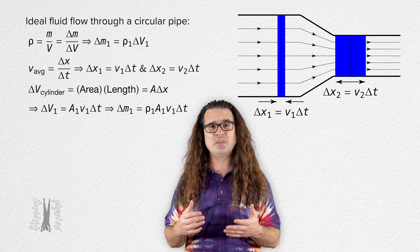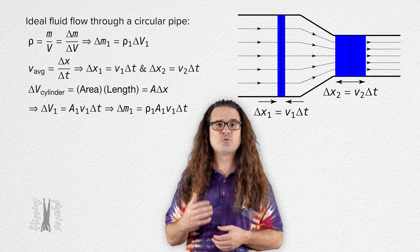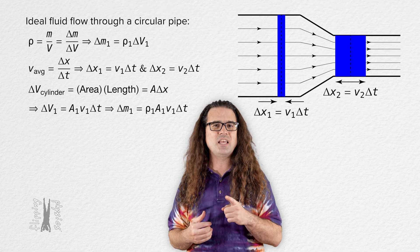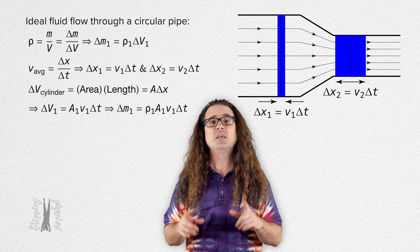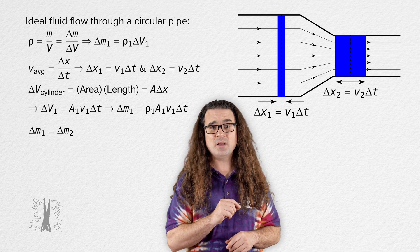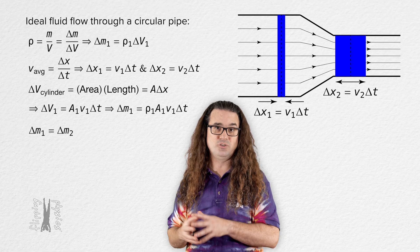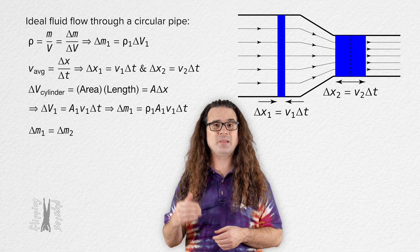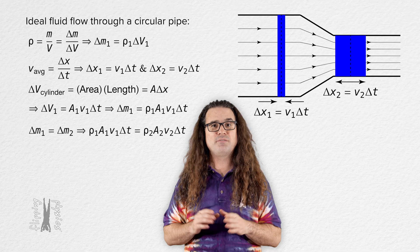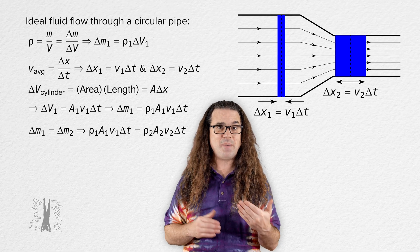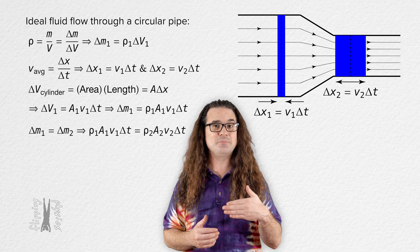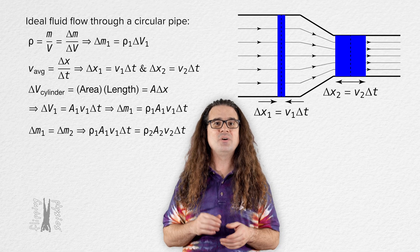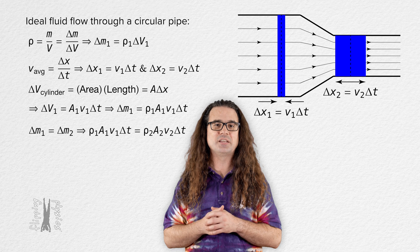Because there are no losses of fluid within the pipe, all the mass that passes through plane 1 will eventually have to pass through plane 2. Therefore, during the same change in time, the same amount of mass passes through each plane: delta m₁ = delta m₂. Substituting gives us ρ₁ × A₁ × v₁ × delta t = ρ₂ × A₂ × v₂ × delta t.